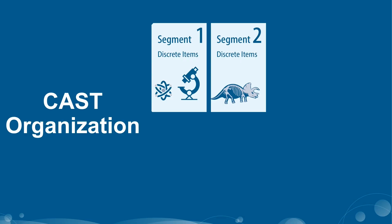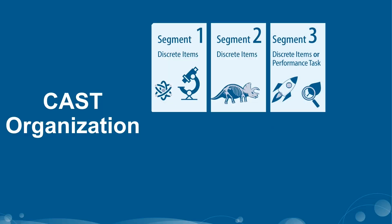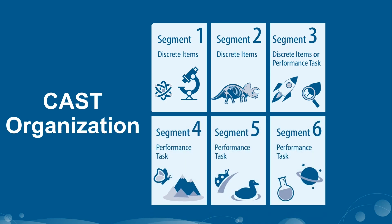CAST is an untimed, computer-based assessment that consists of six test segments and a student survey. Segments 1 and 2 consist of discrete or stand-alone items — 13 items for grade 5, 14 items for grade 8, and 16 items for high school per segment. Segment 3 is comprised of either discrete items or a performance task. Segments 4, 5, and 6 consist of a performance task covering one of the three domains: Earth and Space Sciences, Life Sciences, or Physical Sciences. Each performance task contains four to six items, with one item being a constructed response.